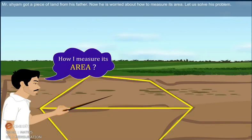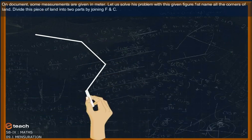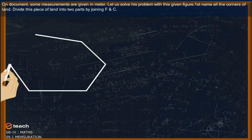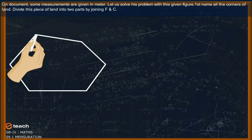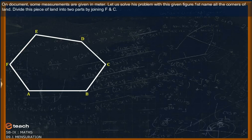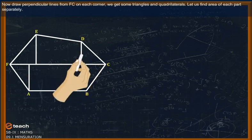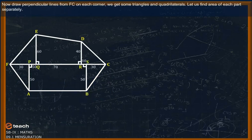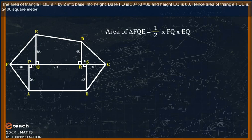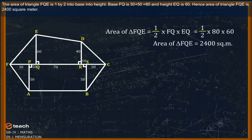Mr. Sham got a piece of land from his father. He is worried about how to measure its area. Let us solve his problem. On the document, some measurements are given in meters. First, name all the corners of the land and divide this piece of land into two parts by joining F and C. Drop perpendicular lines from FC on each corner. We get some triangles and quadrilaterals. The area of triangle FQE is (1/2) × base × height. Base FQ is 30 + 50 = 80, and height EQ is 60. Hence, the area of triangle FQE is 2400 square meters.